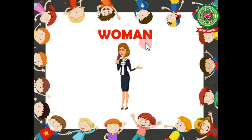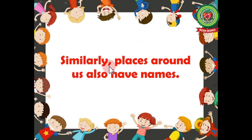Woman — w-o-m-a-n, woman — name of a person, so noun. That means each and every person whom we meet has a name, and these naming words are called nouns. Similarly, every place we visit around us also has a name.